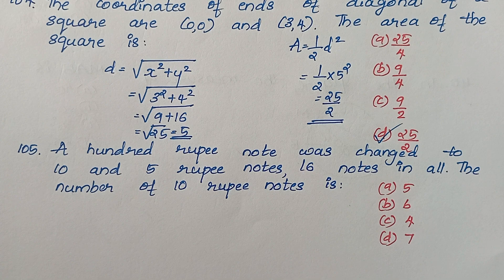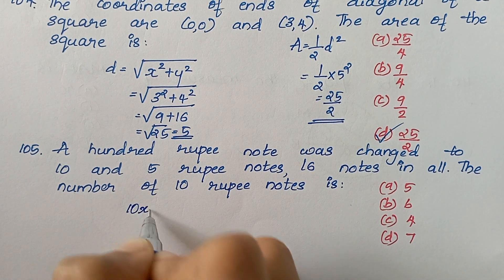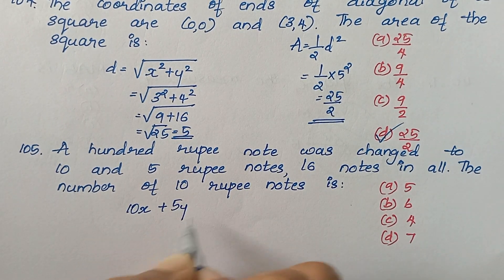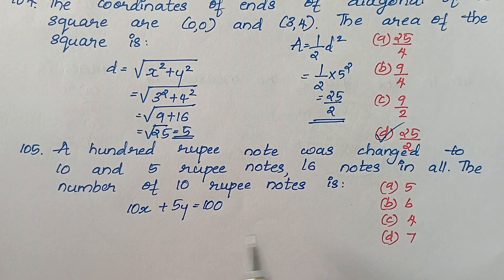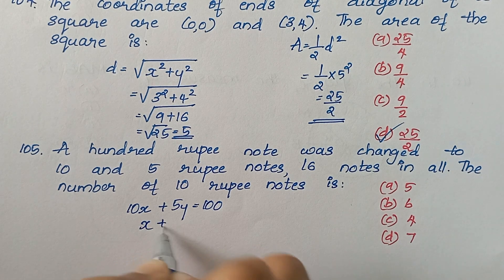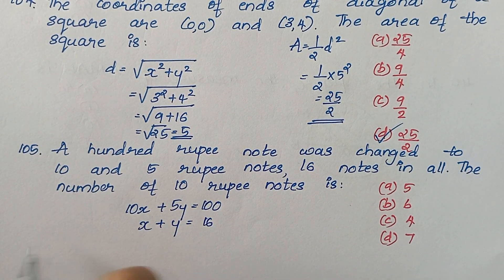Question 105: A 100 rupee note was changed to 10 and 5 rupee notes. We set up the equations: 10x + 5y = 100, and x + y = 16 notes total. We solve to find the values of x and y.